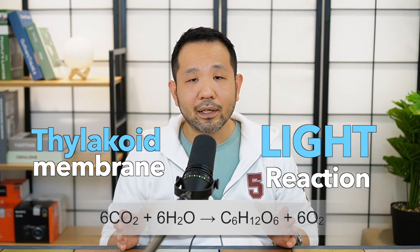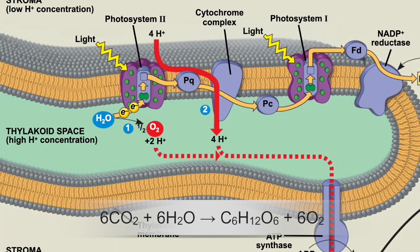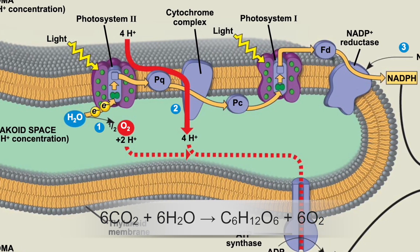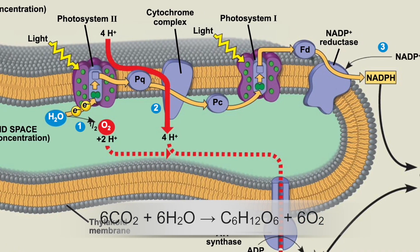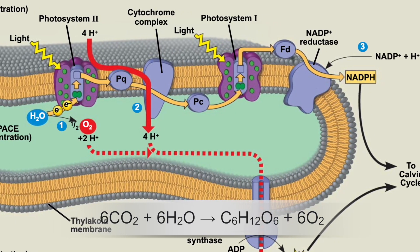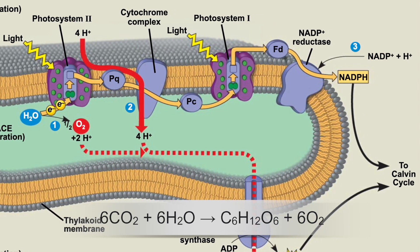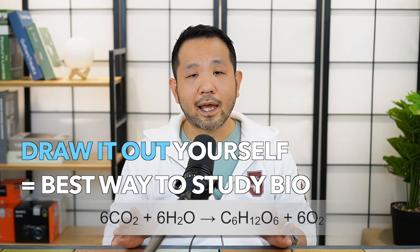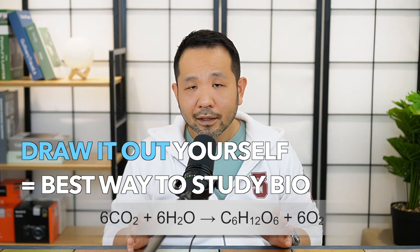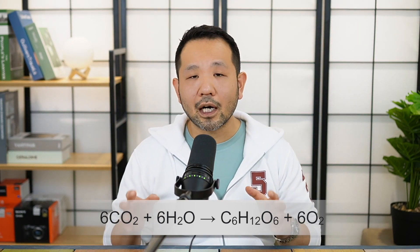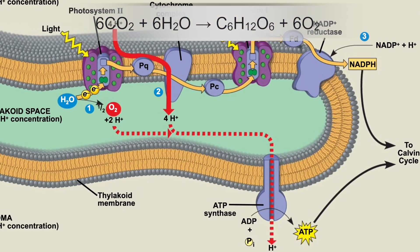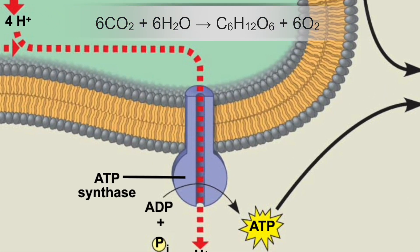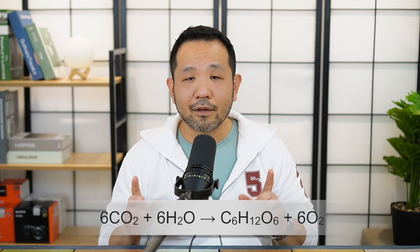Along the thylakoid membrane we have what we call the electron transport chain, which is comprised of several membrane-bound proteins, starting with photosystem 2, plastoquinone, cytochrome C, plastocyanin, photosystem 1, ferredoxin, and NADP+ reductase. Now I know that's a lot to remember, but if you draw it out a couple of times yourself, you'll get a hang of what's going on with the electron transport chain. The ETC is also coupled with another very important protein called ATP synthase, which as you could imagine by its name, is capable of synthesizing ATP.